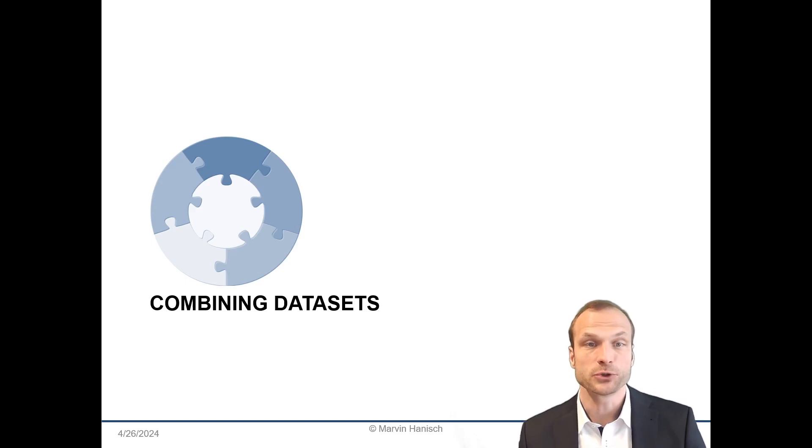In principle, there are two ways to combine datasets: horizontal and vertical combinations. In horizontal combinations, you add new columns from a secondary data source to your primary dataset. In a vertical combination, you add additional rows from a secondary source to your dataset.